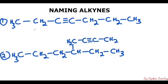So if we count from this side, we have one, two, three, four, five, six, seven. From here, we have three — this is where the triple bond started from. If we count from the other side: one, two, three, four — the triple bond started from four, which is a higher number than three.